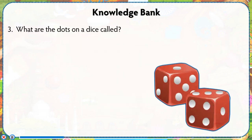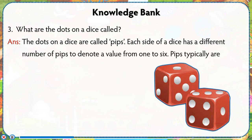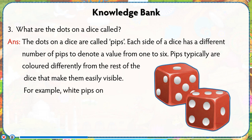What are the dots on a dice called? The dots on a dice are called pips. Each side of a dice has a different number of pips to denote a value from 1 to 6. Pips are typically colored differently from the rest of the dice to make them easily visible — for example, white pips on a red dice or black pips on a white dice.